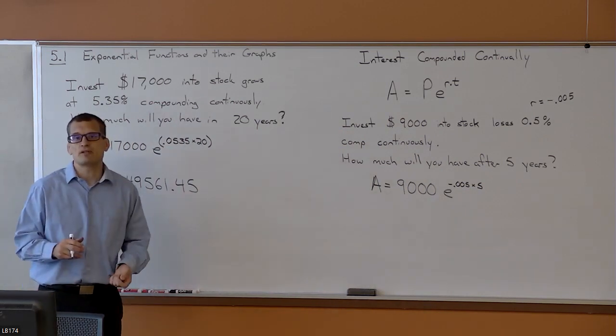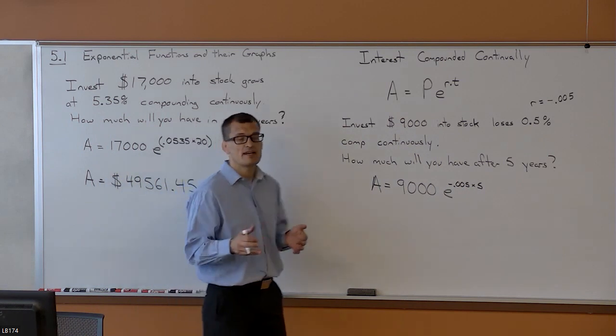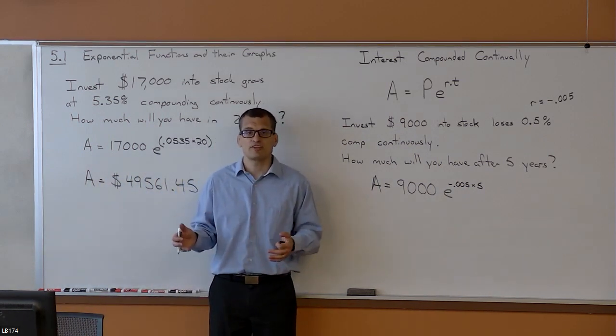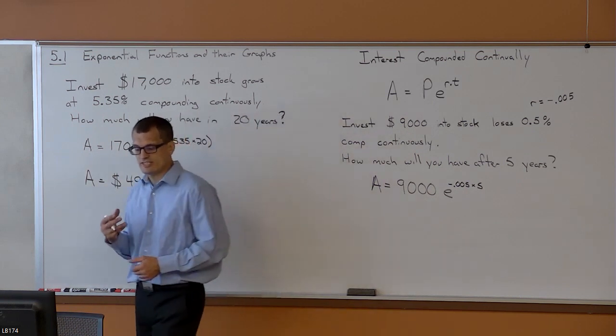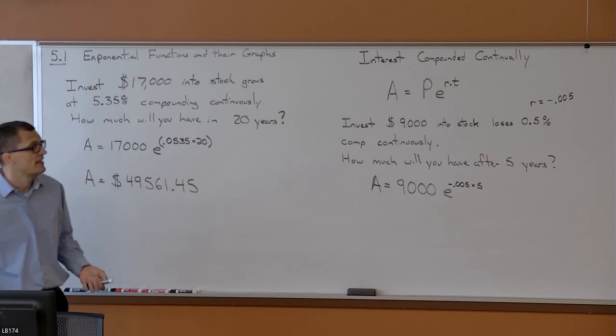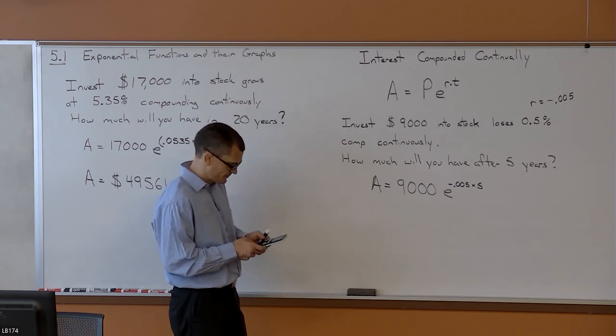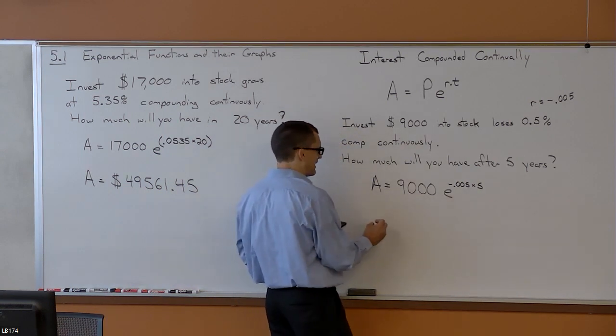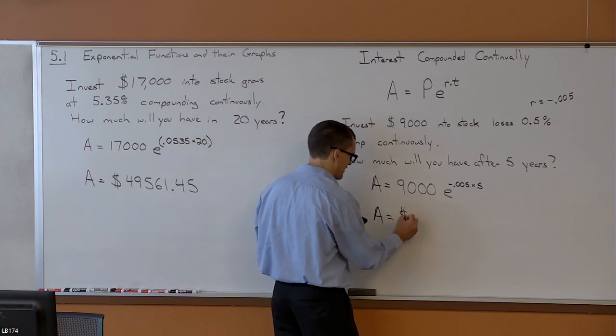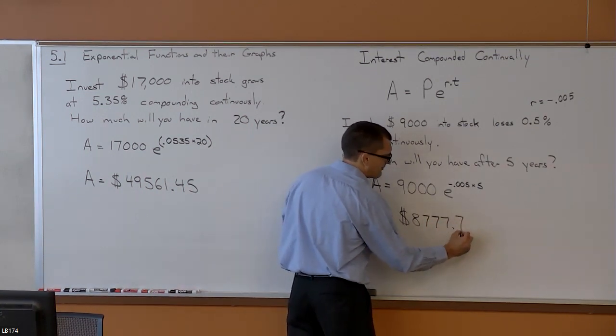By the way, that same phenomenon would have happened if you compounded M times per year. If you were losing money, losing 3% per year, you do negative 0.03. So, when you're losing money or your money is decaying, then all we have to use is a negative rate. But, here we'll do this. So, if you lost a half percent for five years, after five years, your money is going to be at $8,777.79. That makes sense.